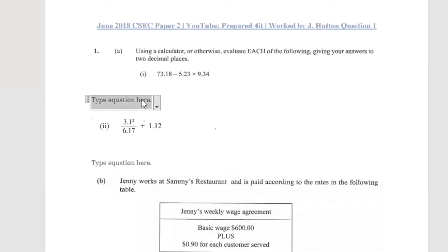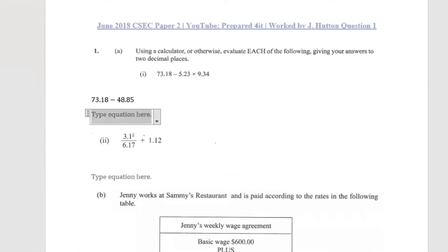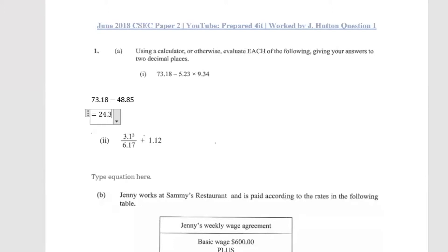We work out the multiplication aspect first: 5.23 multiplied by 9.34 gives 48.85. Now we do the subtraction: 73.18 minus 48.15, and the result is 24.33. That is our answer for the first part of question one.